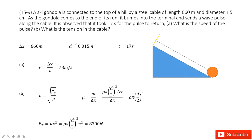In this question, we can see we have a gondola. It's connected at the top of a hill by a steel cable. The length and diameter is given. Then we find as the gondola comes to the end, it punches into the terminal and sends a wave back to the cable.